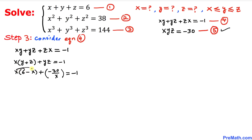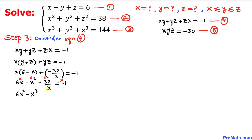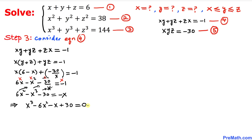Distributing gives x(6 − x) + (−30/x) = −1, which is 6x − x² − 30/x = −1. Multiplying every term by x to eliminate the fraction: 6x² − x³ − 30 = −x. Moving everything to one side gives us the cubic equation x³ − 6x² − x + 30 = 0, which we now solve for x.